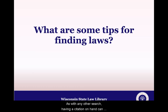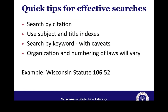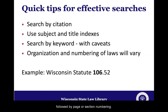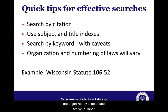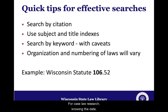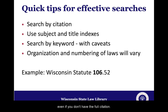As with any other search, having a citation on hand can make quick work of locating a law or a case. Every set of laws has its own numbering conventions. The easier-to-understand systems tend to follow some type of book convention with a year or volume style numbering, followed by page or section numbering. The Wisconsin statutes, for example, are organized by chapter and section number — you would look in chapter 106 of the Wisconsin statutes for section 52. For case law research, knowing the date, court, and names of the parties can be another helpful way to search, even if you don't have the full citation.